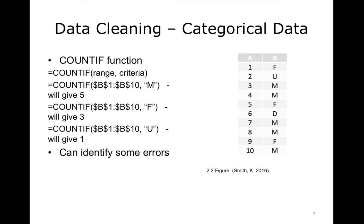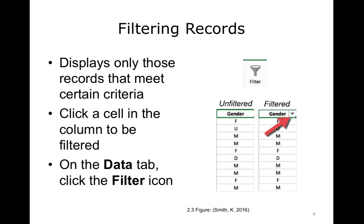Let's look at another Excel tool called Filter. Excel's Filter function lets you display only records that meet certain criteria. To filter records, click a cell in the column to be filtered — in this case, the gender column — and then click the filter icon on the Data tab. Nothing will appear to happen other than a drop-down arrow will now appear at the right-hand side of the column heading. Click the drop-down arrow, and we'll look at what happens on the next slide.